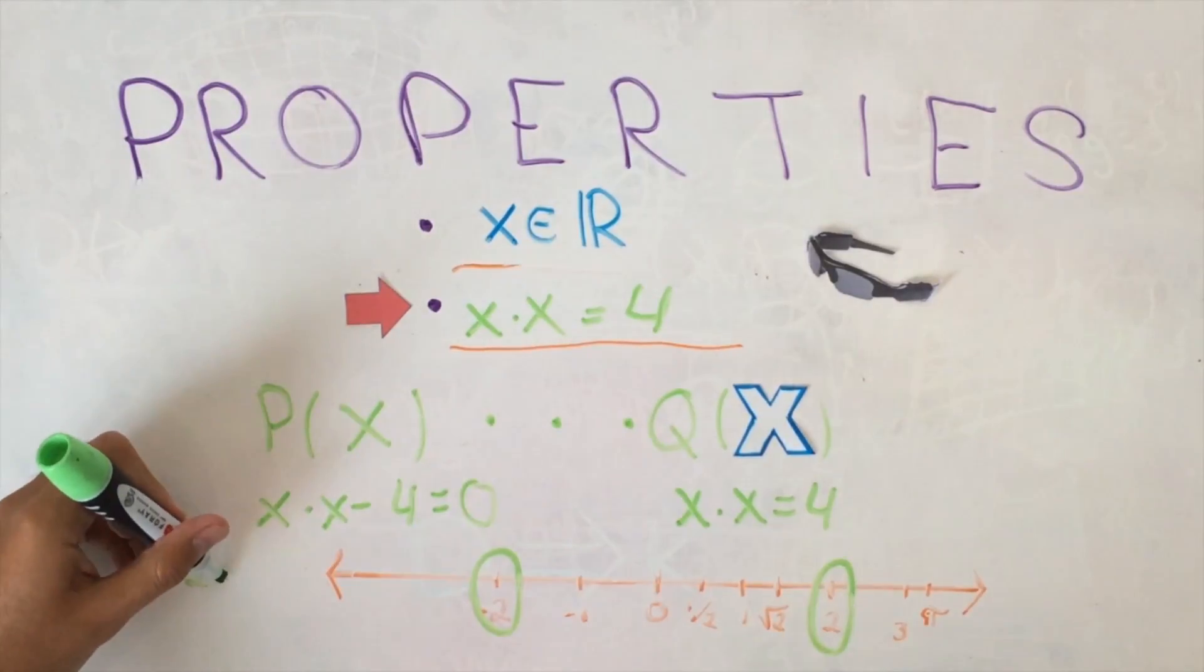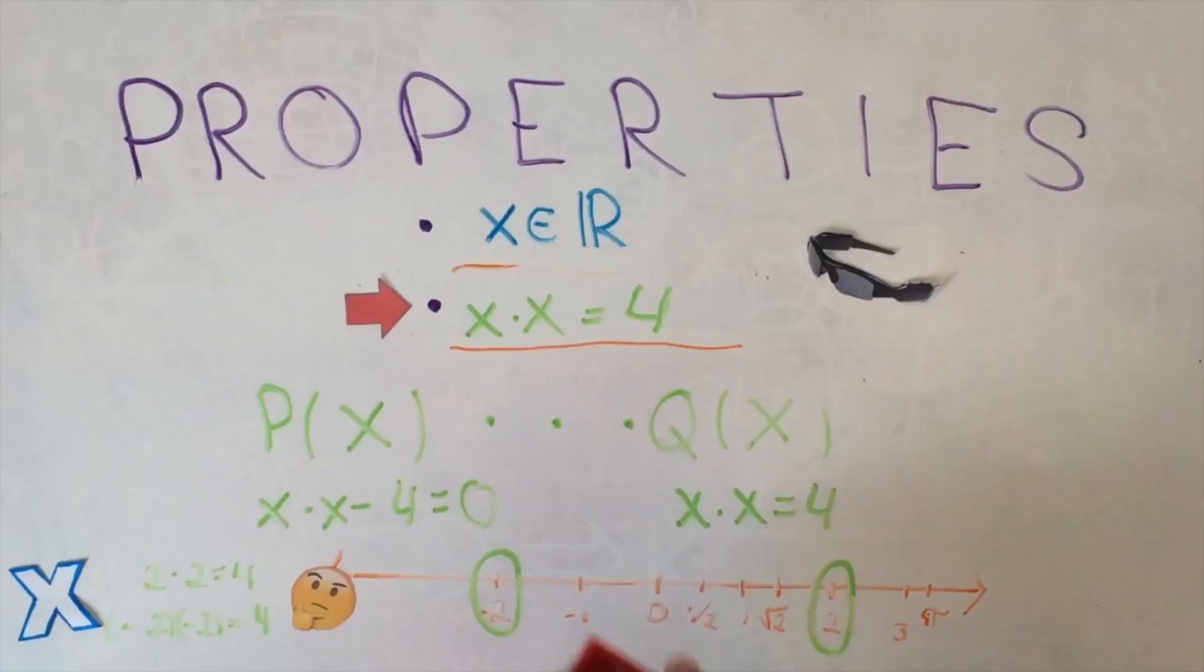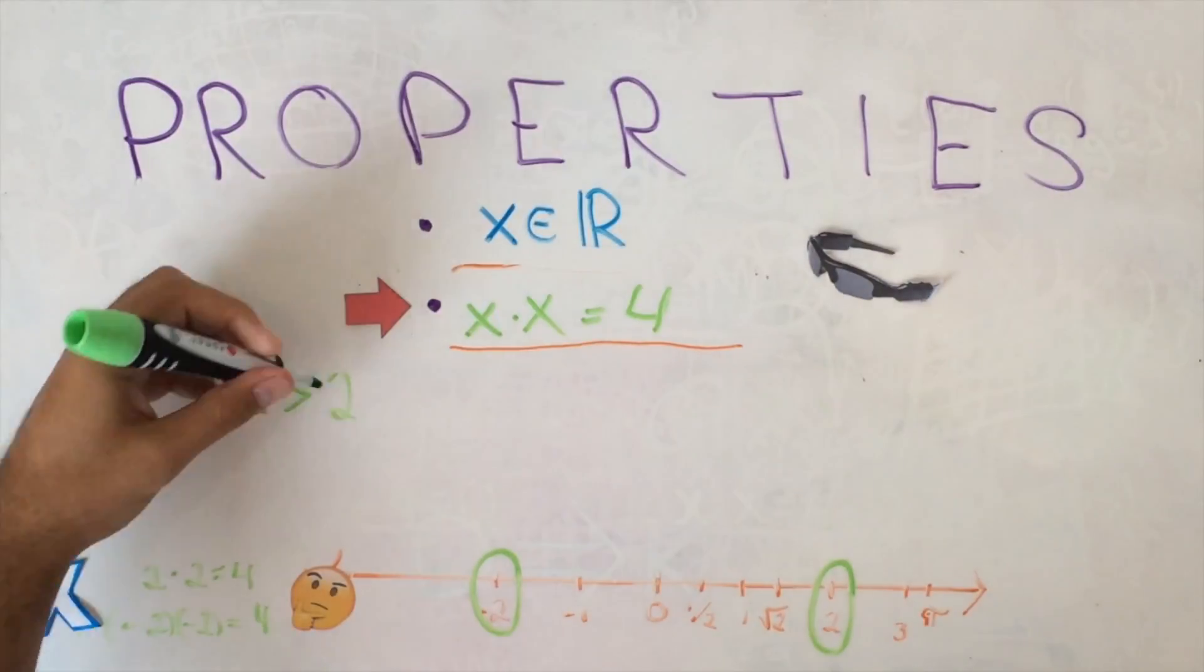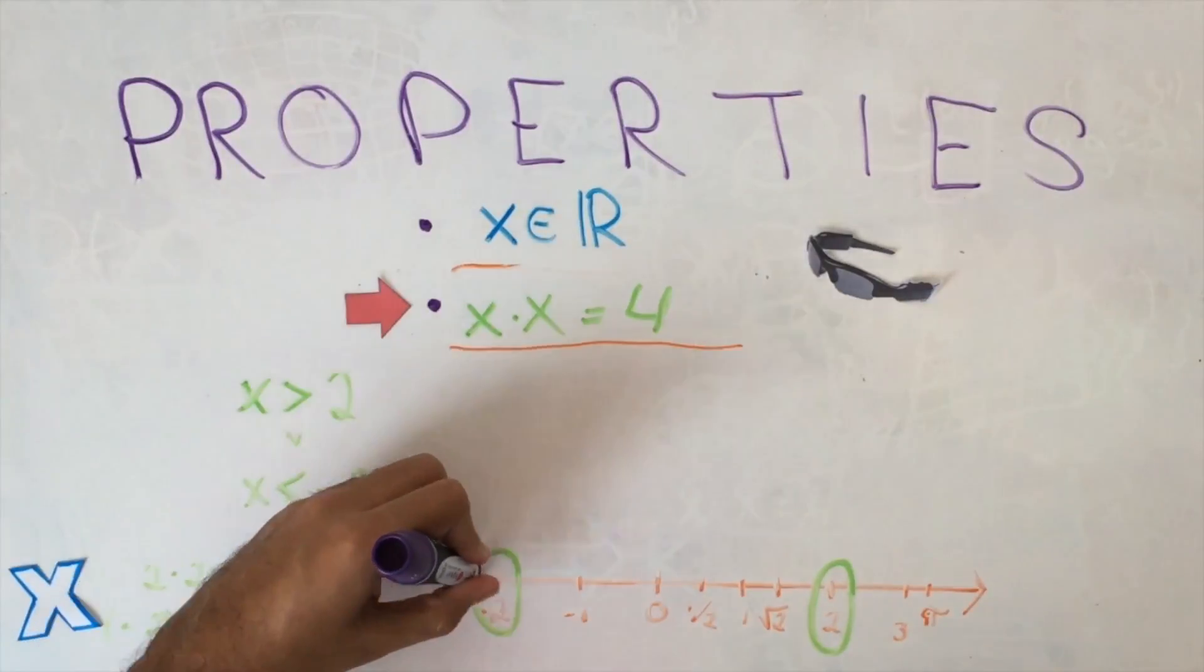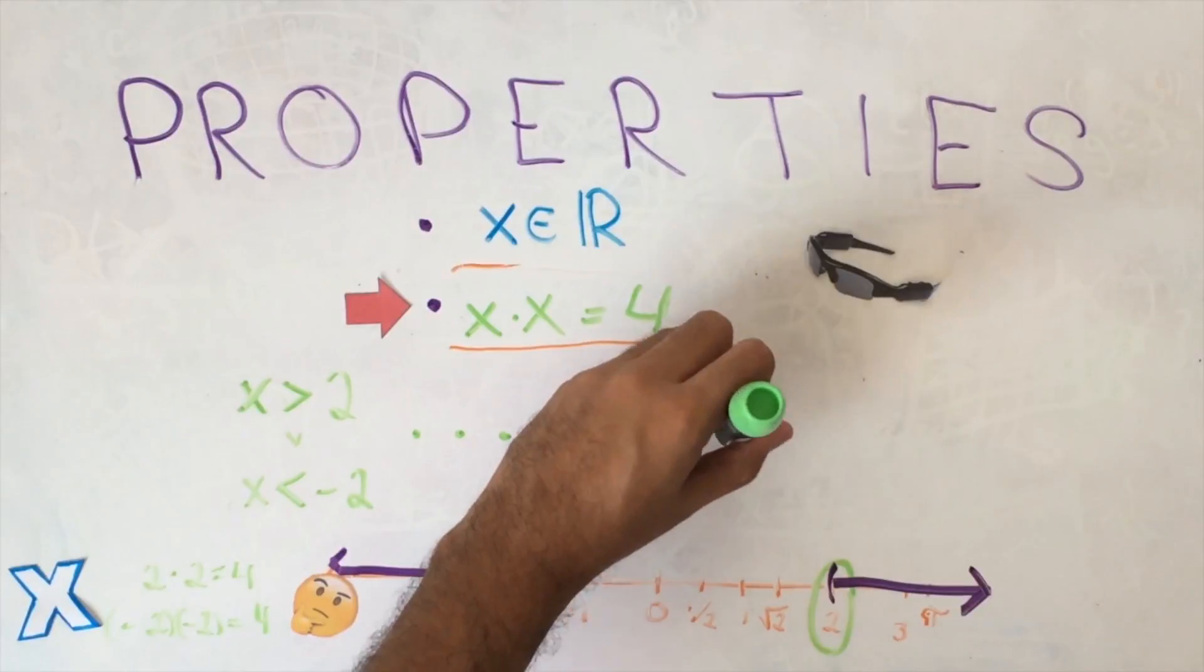We know that 2 and minus 2 satisfy this, but are they the only ones? We can answer this by studying the properties of real numbers. If X were a real number greater than 2, or lesser than minus 2, X times X would be greater than 4.